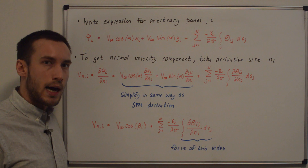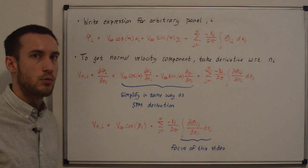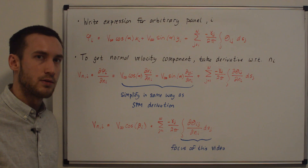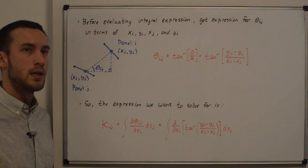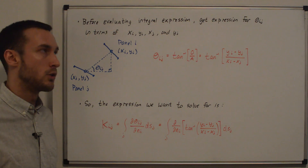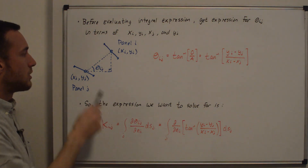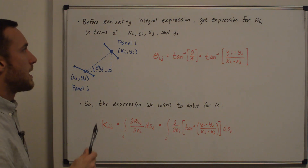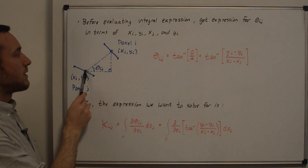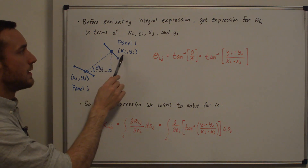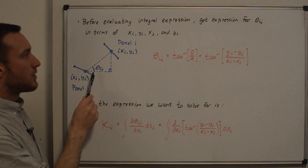The integral d theta_ij / d n_i integrated over dsj is the focus of this video. If you haven't watched the iij source panel method derivation video, please watch that first because the denominator will be the same. Before evaluating the integral, we need an expression for theta_ij in terms of variables we can integrate over: x_i, y_i, x_j, and y_j. Here I've drawn two panels — panel i and panel j — in random orientations.